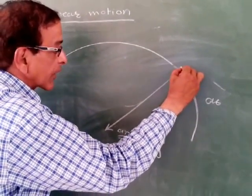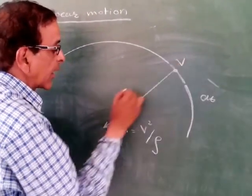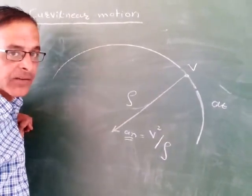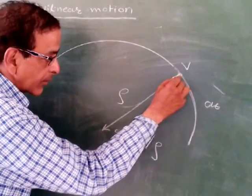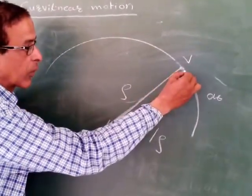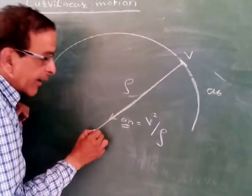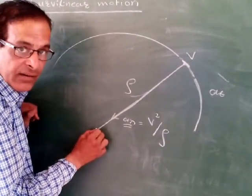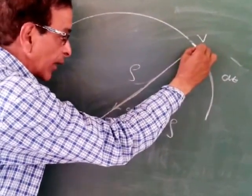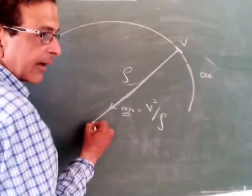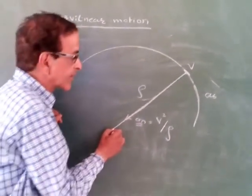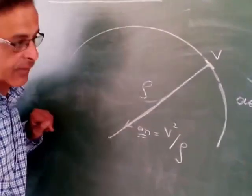Remember that this normal acceleration is given by v² divided by ρ, where v is the velocity at that instant and ρ is the radius of curvature. The particle is supposed to rotate about the instantaneous center, and the distance from the point on the path to the center of rotation is called the radius of curvature.